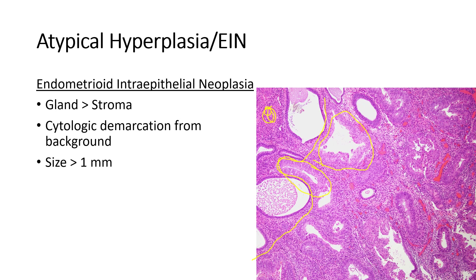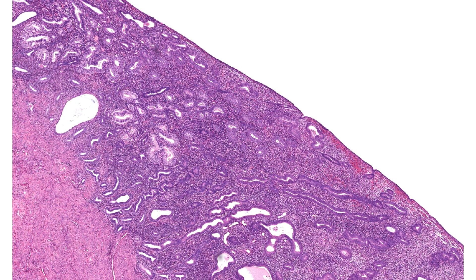There is also a size criterion for EIN: you need an area greater than one millimeter for this cytologic demarcation. So if you get one off-gland that is crowded up but looks slightly different, that's not quite enough. Here's a low-power example — whether you call this EIN or atypical hyperplasia, you can draw a line and note that glands toward the top look different from those at the bottom, which appear essentially benign. So either classification, this would meet the criteria.